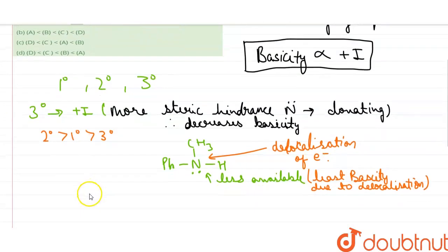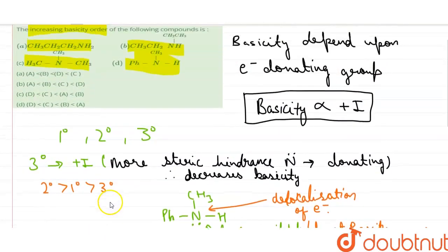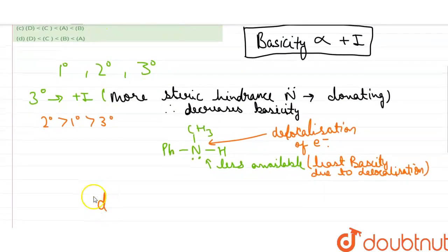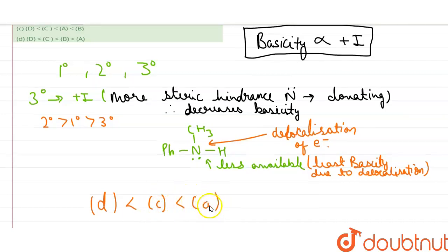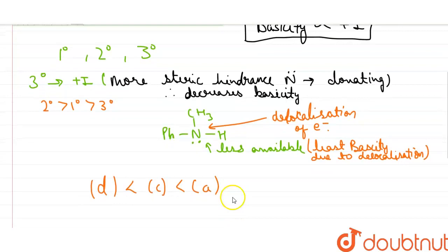So looking at the options, option D will be the least, then option C since it is a tertiary amine which will have more steric hindrance, then option A, and then option B.